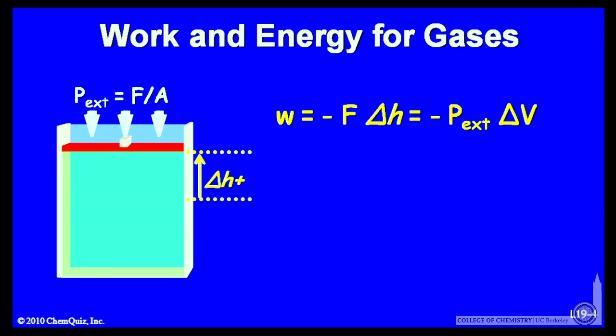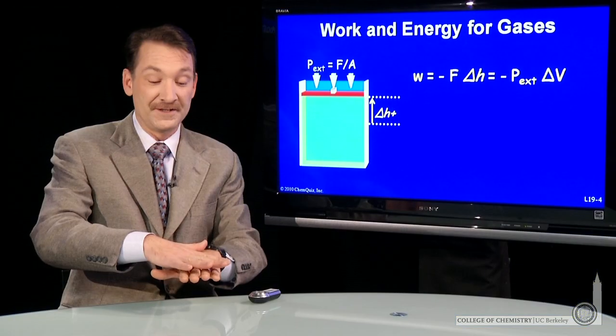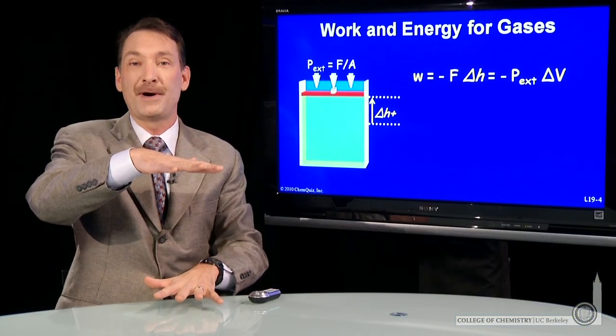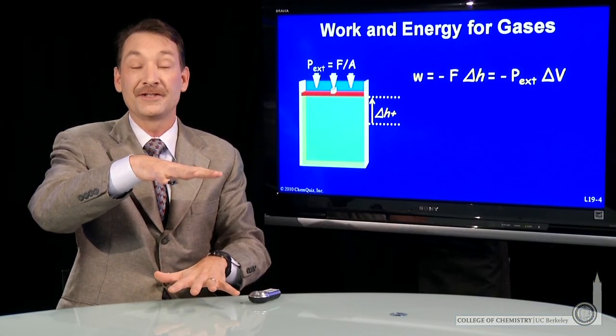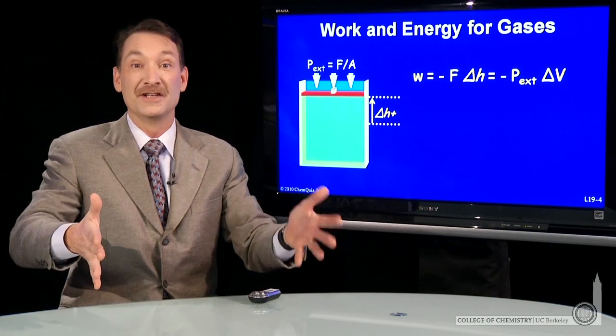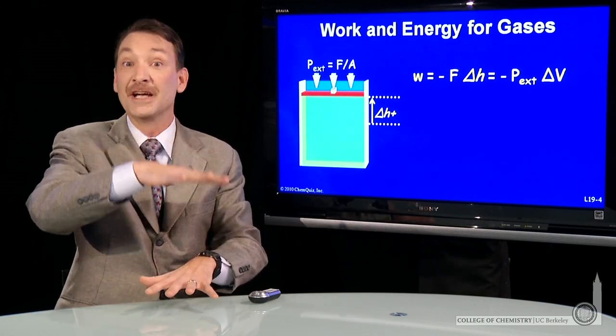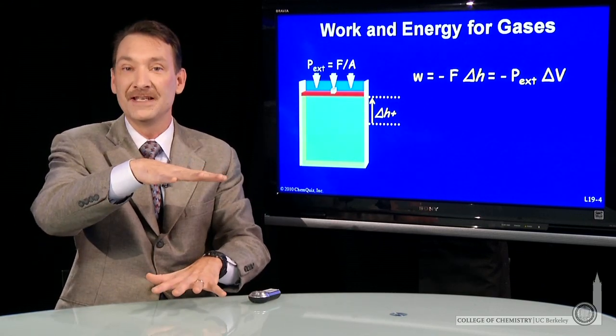Pressure times change in volume with a negative sign. And the negative sign just says, if the system expands, that's a positive ΔV. Delta always means final minus initial. And if I expand, final's bigger than the initial. So that's a plus ΔV.